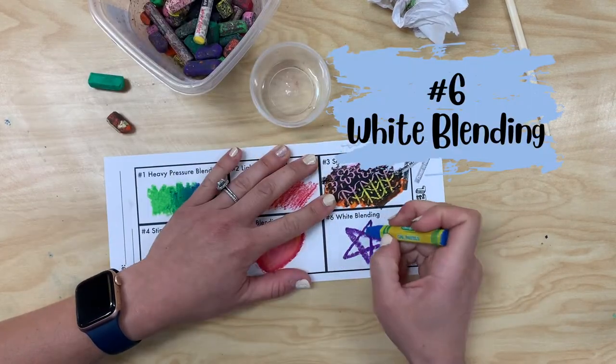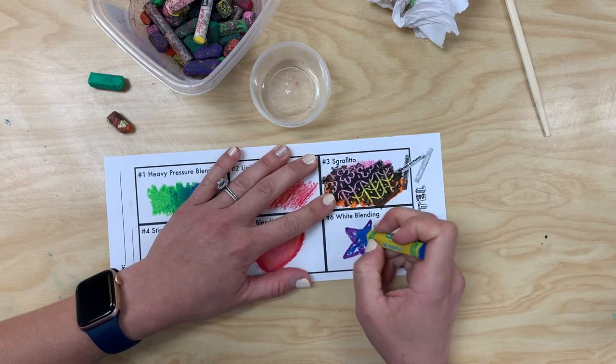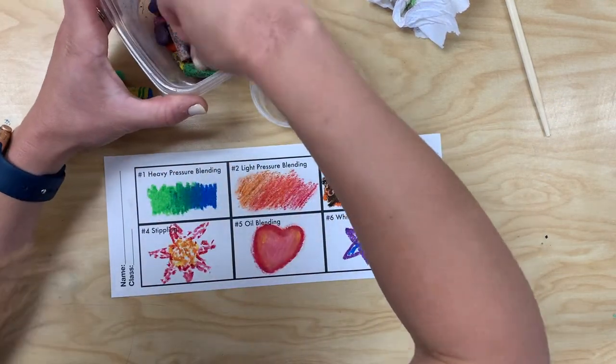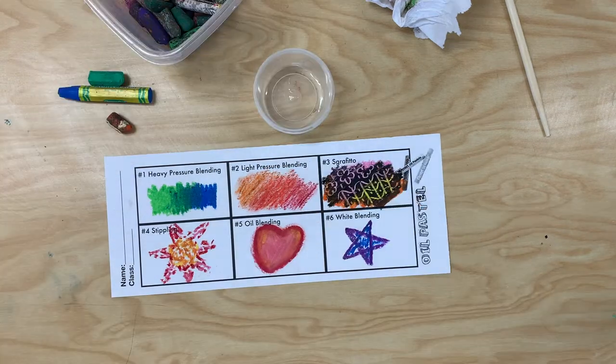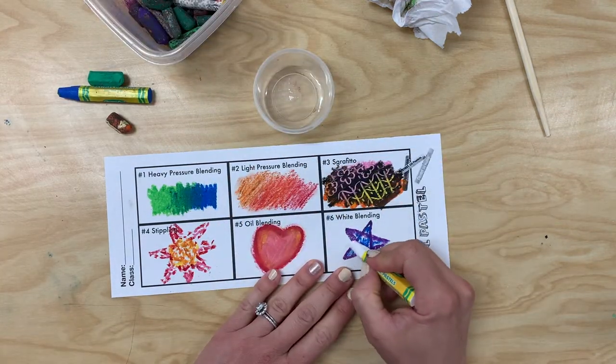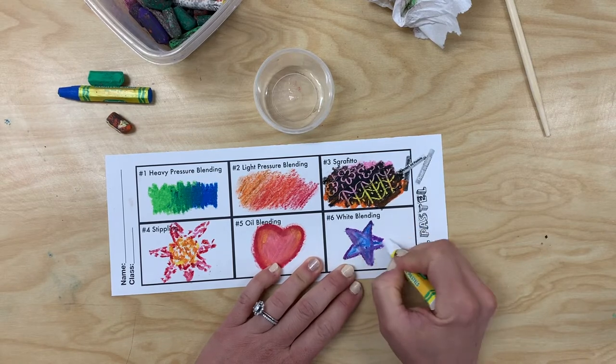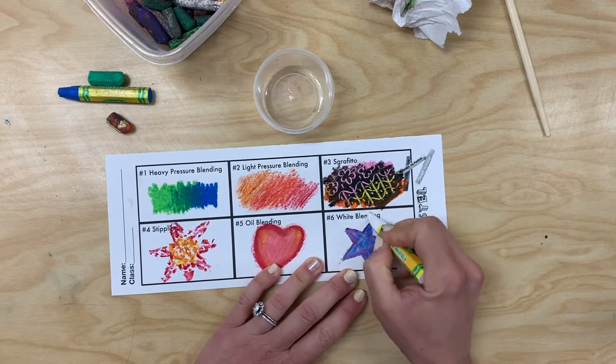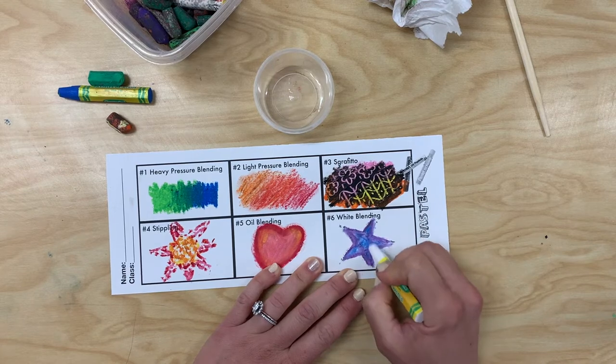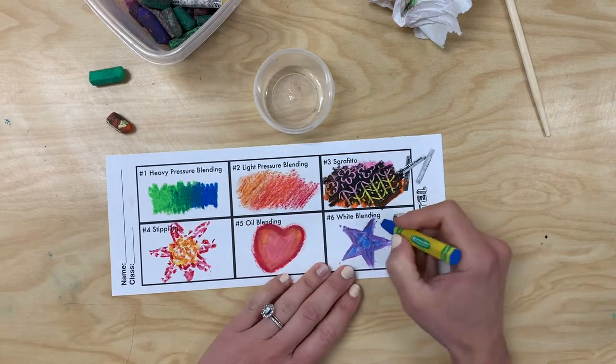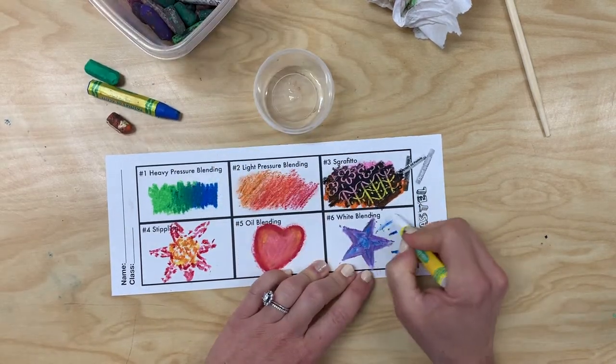Our last technique is using white to blend. Here I'm drawing a star, but you can draw whatever you would like. You're going to use white oil pastel over the top to create a softer texture as well. This is making tints of every color that you are going over, as you're adding white to that color and it's becoming more of a pastel look.